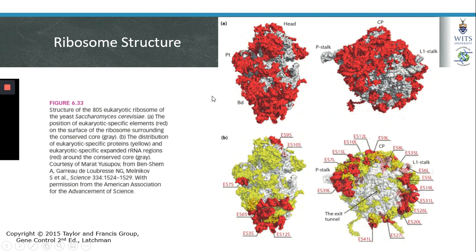This diagram shows how eukaryotic ribosomes differ from prokaryotic ribosomes. The gray regions represent conserved regions of the ribosome across all species, while the red regions show the additional layer of proteins found in eukaryotic ribosomes. Eukaryotic-specific proteins are shown in yellow and eukaryotic-specific RNAs in red. Eukaryotic ribosomes are slightly larger due to these additional proteins and RNAs.